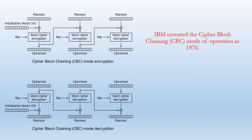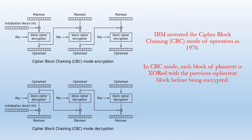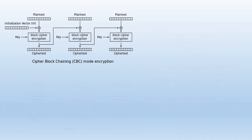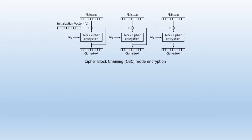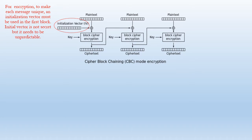IBM invented the Cipher Block Chaining mode of operation in 1976. In CBC mode, each block of plain text is XORed with the previous cipher text block before being encrypted. This way, each cipher text block depends on all blocks processed up to that point. To make each message unique, an initialization vector must be used in the first block.